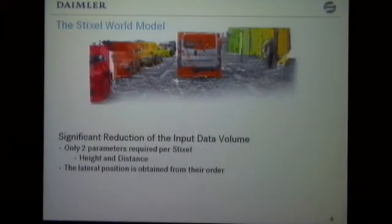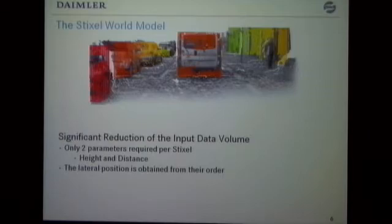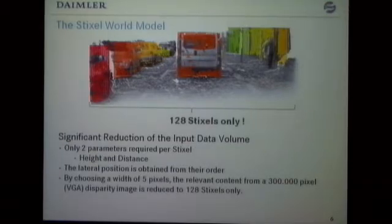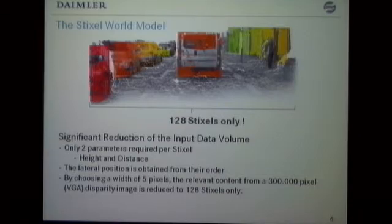As I said, we have over 300,000 disparity measurements, yet every single static Stixel is given by two parameters only: the height information and the distance information. The lateral position is encoded in the ordering of all Stixels, which is possible due to the fixed width of Stixels within the image. Assuming a width of five pixels, the relevant information from a VGA-sized image — 300,000 disparity measurements — can be reduced to just 128 Stixels.